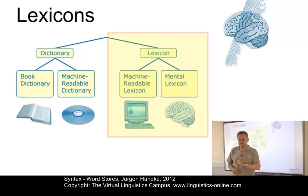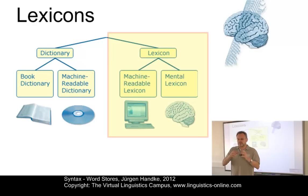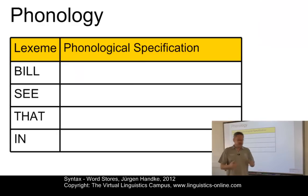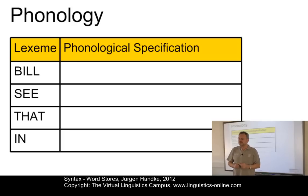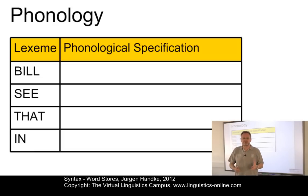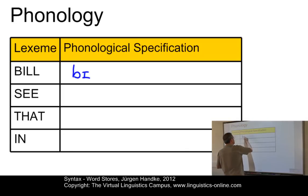Let's see how this information — the information associated with lexical entries — is represented. We will look at all levels of linguistics, from phonology to semantics. Here I have four lexemes: Bill, C, and that. I would now like to build up the phonological information associated with each entry. The phonological specification in the lexicon defines the segmental and suprasegmental properties of a lexeme — that is, we have to present the phonemic structure.